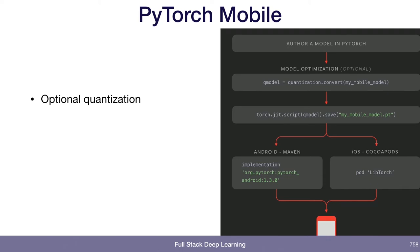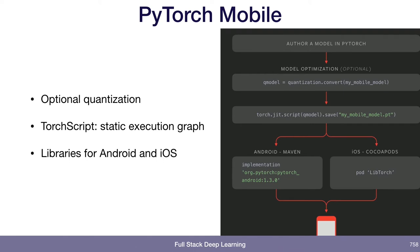In PyTorch Mobile, you train your model in PyTorch, which executes a Python code path — which obviously you don't want to run on your mobile or embedded device. You can optionally quantize your weights first with quantization.convert. But the real heavy lifting is done by TorchScript — torch.jit.script — which takes your model and compiles it from a flexible Python code path to a static execution graph, just like the old TensorFlow execution graph, then saves it in the TorchScript format. PyTorch also provides libraries for both Android and iOS: LibTorch for iOS and PyTorch Android for Android, which can load the TorchScript model and serve it.